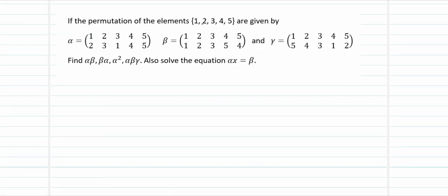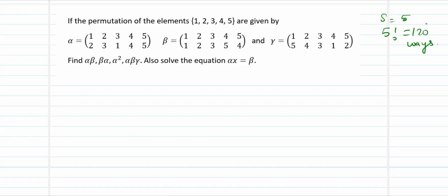The permutation of the elements 1, 2, 3, 4, 5 — five elements — are given by alpha, beta, and gamma. We have to find the values of alpha beta, beta alpha, alpha square, and alpha beta gamma. Further, we will have to solve the equation alpha x equal to beta. There are going to be 5 elements in your set S, which can be arranged in 5 factorial — meaning 120 — ways. Out of this we have been given just 3 permutations, and we have been asked to find the value for the compositions.